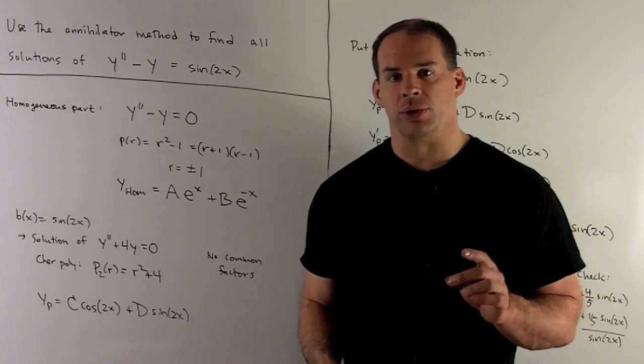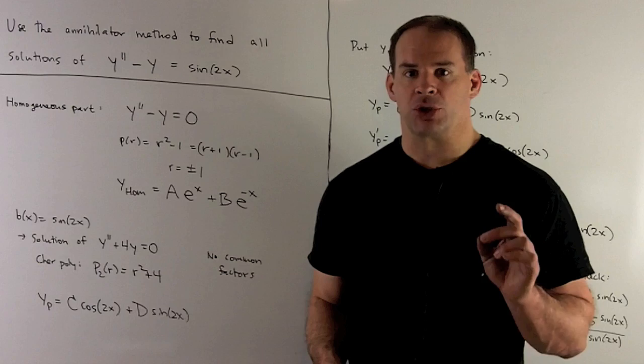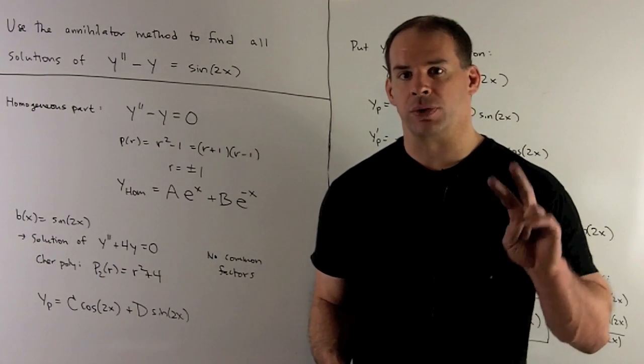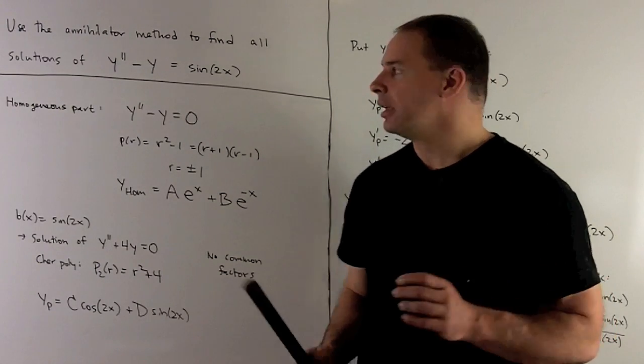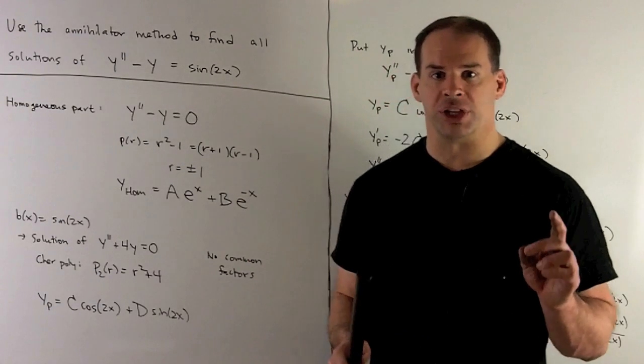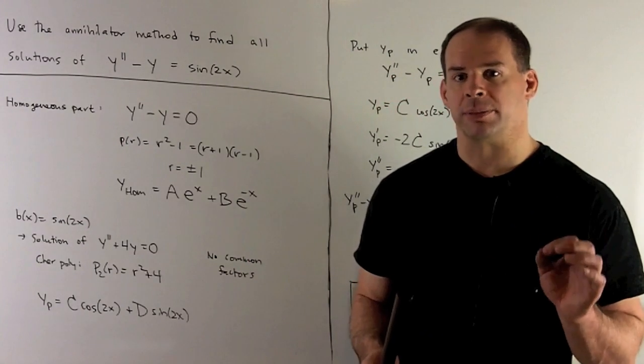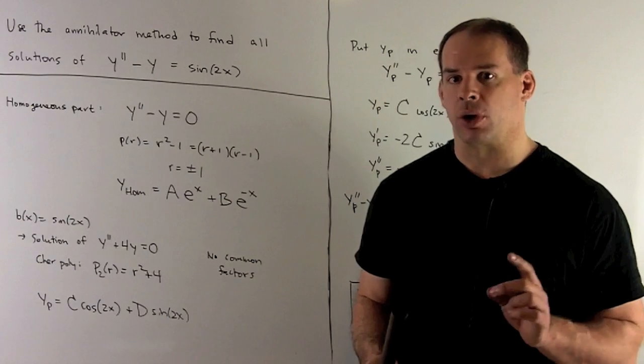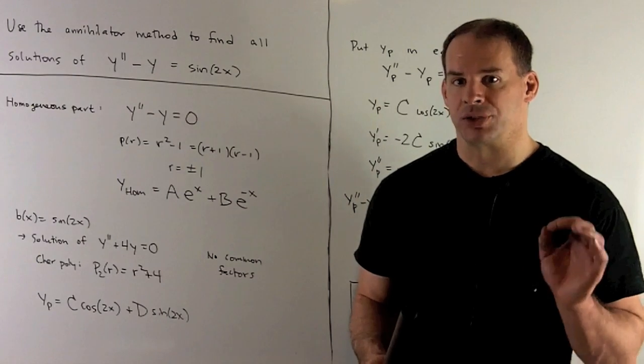Before we can use the annihilator method, we have to make sure that it applies to this problem. So we need to check two things. First, if we replace sine of 2x with a zero, we're taking the homogeneous equation. I want that to be a linear ODE with constant coefficients. It's going to be the case here.